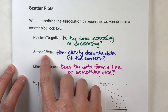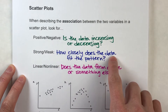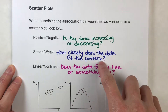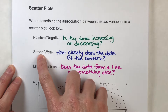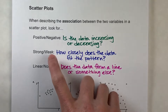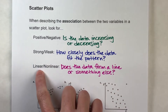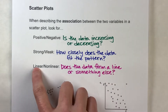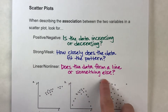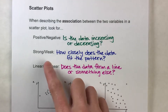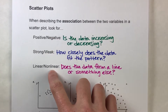To determine if it's strong or weak, we ask ourselves: how closely does the data fit the pattern? If it really closely fits the pattern we see, then that's a strong association. But if it kind of follows the pattern but it's fairly loose, then you could say it's a weak association. And then finally, for linear or nonlinear, we ask: does the data form a line? If it does, it's linear. Or does it form something else, some other shape? In that case, it would be nonlinear. The best way to see these three associations is to actually see some examples.